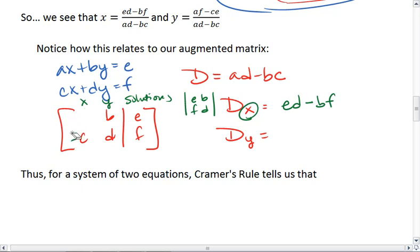Similarly, if we're solving for the determinant with respect to y, what we want to do is take out our y column, put solutions in its place. So we're solving for the determinant of the matrix A, E, C, F, which if we go through is going to be AF minus CE.